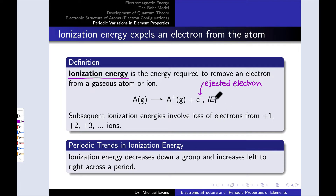The ionization energy here is called IE1 because this is the first electron lost from the neutral atom, and this is universally an endothermic process — energy input is required, so IE1 is positive. We can also think about starting from A+ in the gas phase and losing a second electron; the energy associated with that is called IE2. Losing a third electron going from A2+ to A3+ is associated with IE3, and so on.